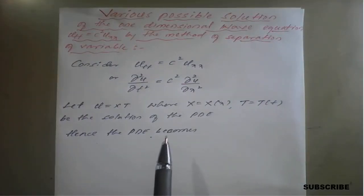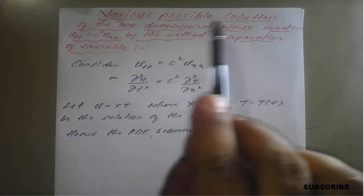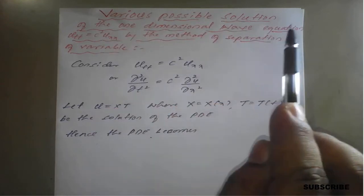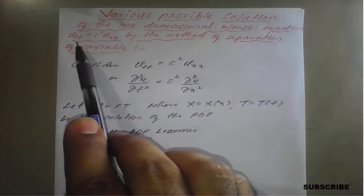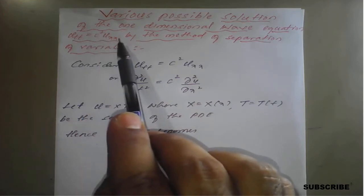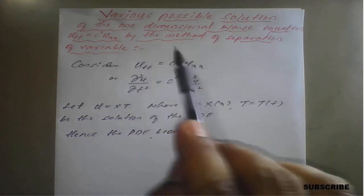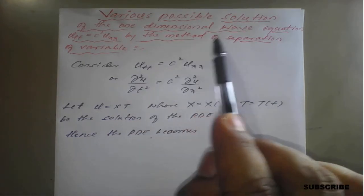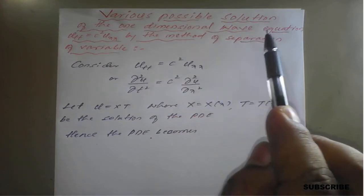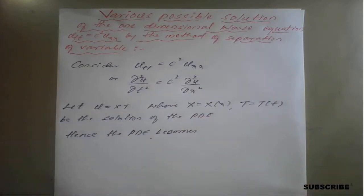Good morning, dear students. The next topic is the various possible solutions of the one-dimensional wave equation, that is Utt = C² Uxx, by the method of separation of variables. In the previous class, we saw various possible solutions of the heat equation. Now we will see what happens with the wave equation.